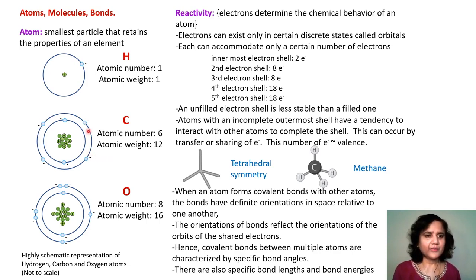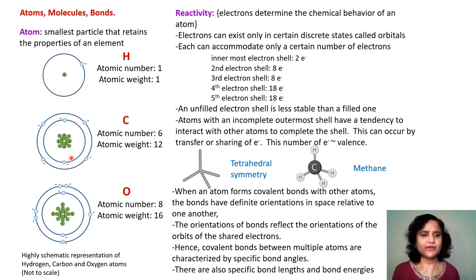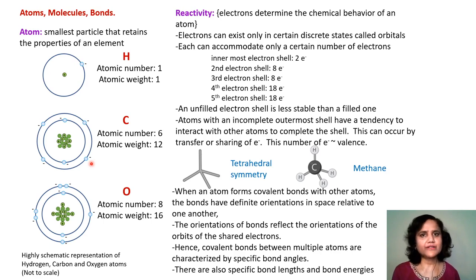This is a highly schematic representation — the positions of electrons cannot be precisely known, as the properties of these subatomic particles are described by quantum mechanics, which we will not be covering in this course. Most importantly, the electrons determine the chemical behavior of an atom in terms of the types of bonds it forms or interactions with other atoms.